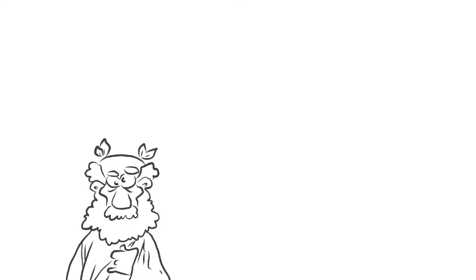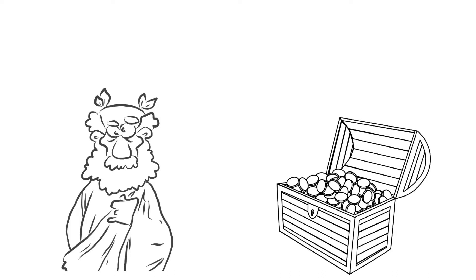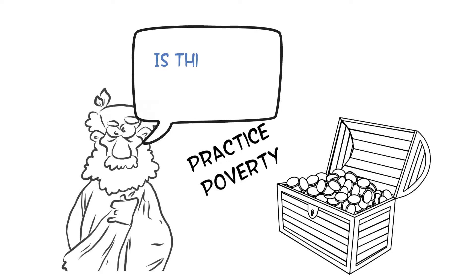This is voluntary discomfort. Seneca was Nero's advisor who enjoyed great wealth. Still, he suggested to set aside a certain number of days each month to practice poverty. While doing this, he advises you to ask yourself the question: Is this what I used to fear?